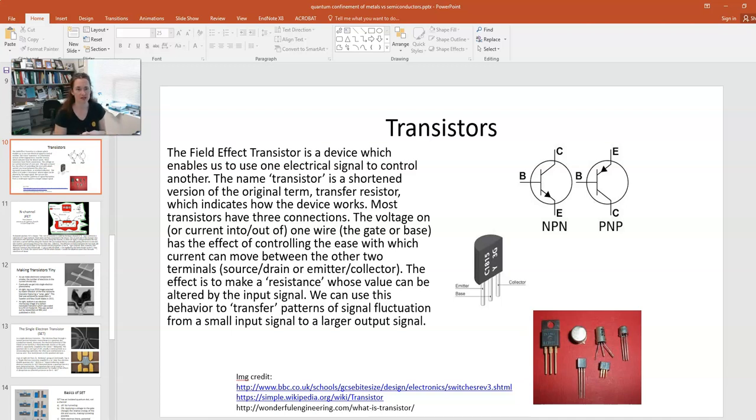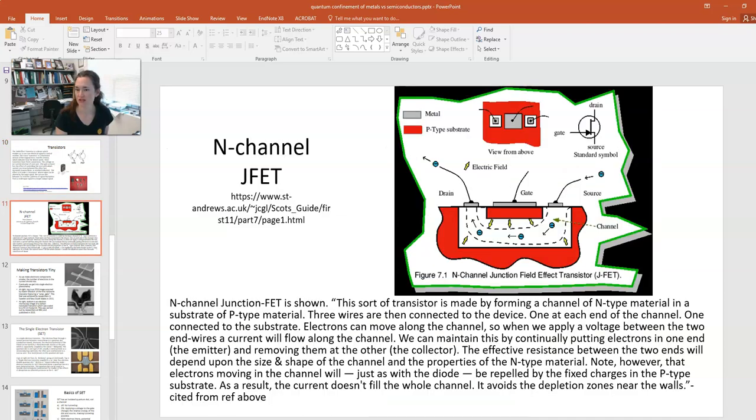And what you're doing is controlling the voltage on one wire, which is your gate or base, and that controls the ease with which current moves between the other terminals, which are the source drain and the emitter collector. So the transistor is the device at the heart of all modern electronics, and of course we want to shrink it down.